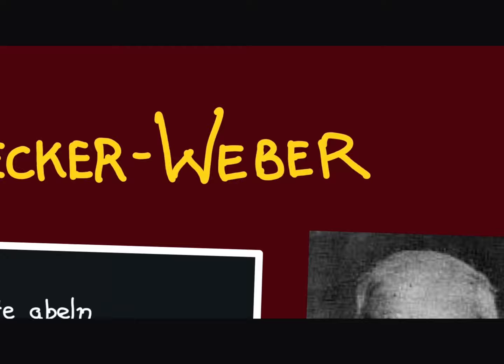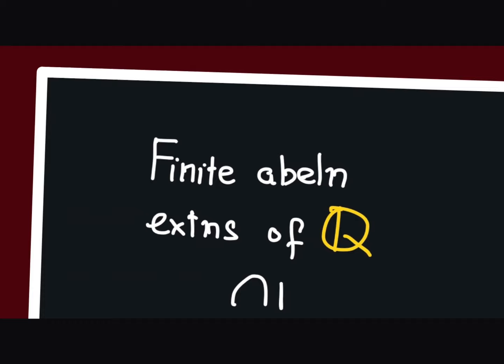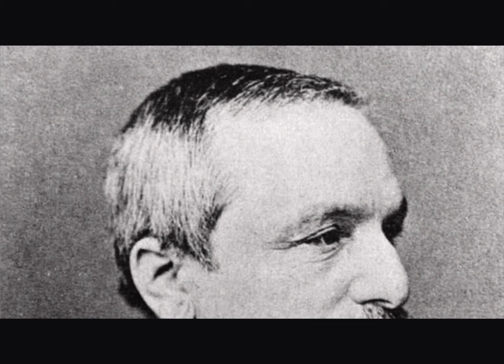In 1853, Kronecker announced what is now called the Kronecker-Weber theorem. This theorem says that every finite abelian extension of the rationals is contained inside some cyclotomic extension of Q.